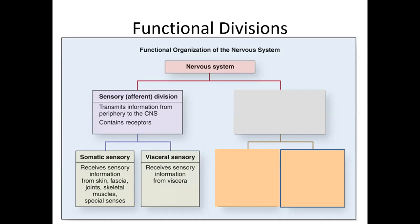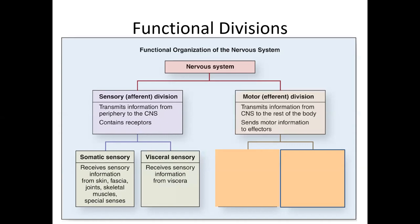An example of visceral sensory would include that feeling of needing to go to the bathroom. So that's the afferent division. The efferent division takes information away from the central nervous system, and those neurons are going to synapse with the effectors. We have four different types of effectors: three of them being the three types of muscles, and the fourth being glands. You would think this would be divided up exactly the same as the sensory division, but in fact it is not.